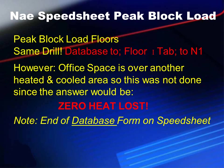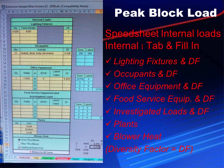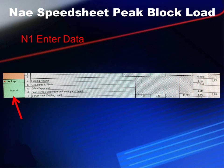After filling in all database-driven components, we switch to a two-step method instead of three steps. We skip the database and go straight to the Internal 1 tab. There, we fill in the diversity factor for lighting fixtures and for occupants, the number of occupants, number of lighting fixtures, office equipment and its diversity factor, food service equipment and its diversity factor, miscellaneous loads, plants, and blower heat. Once back on the N1 form, we enter lighting fixtures, occupants and plants, office equipment, food service equipment, and blower and heating equipment, click on them to select where they go, and they fill in automatically.